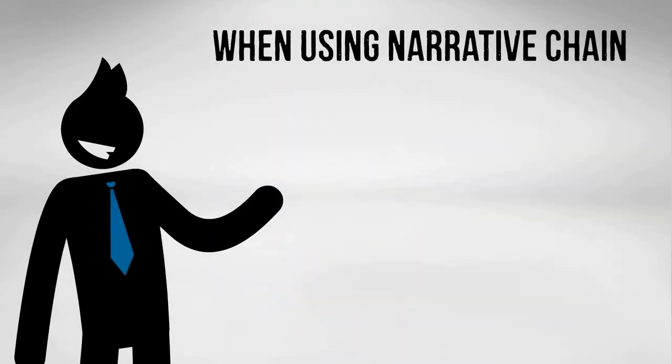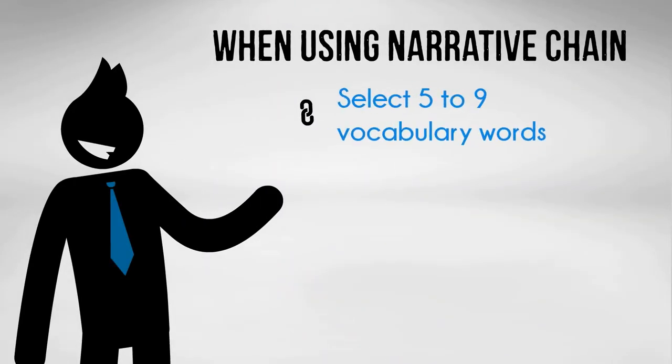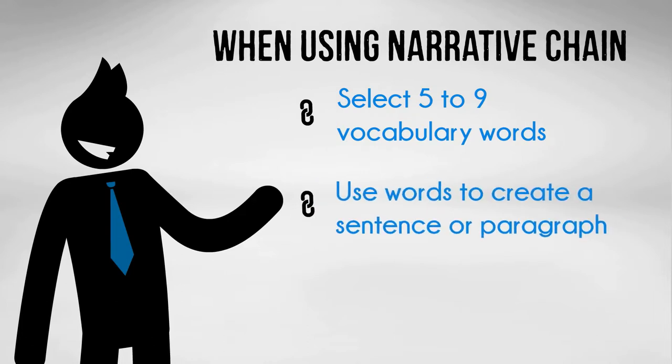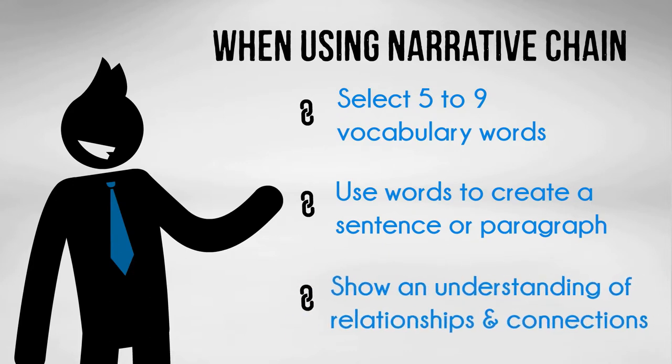It's simple — just select five to nine vocabulary words that are related to a concept that you are teaching. Share with students that they are to use the words to create a sentence or short paragraph. The writing sample must show that they understand the relationships and connections between the words.